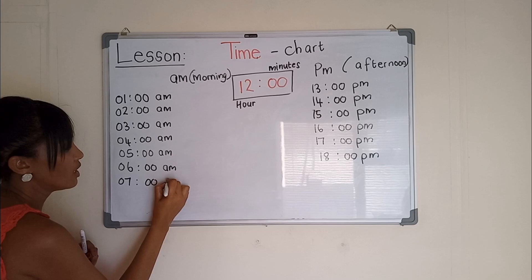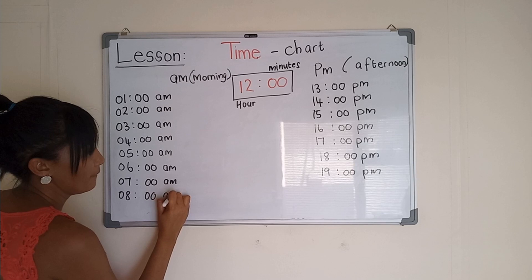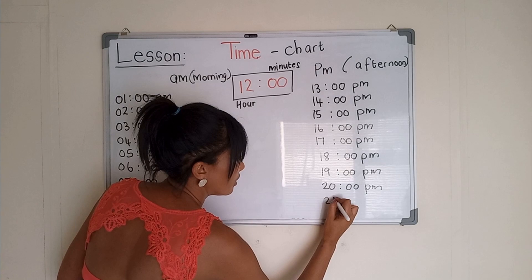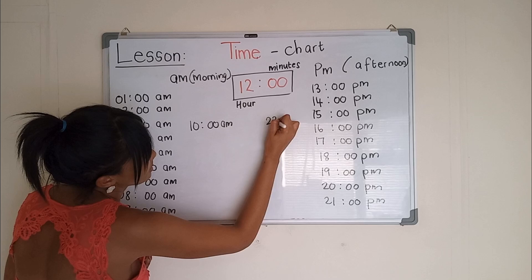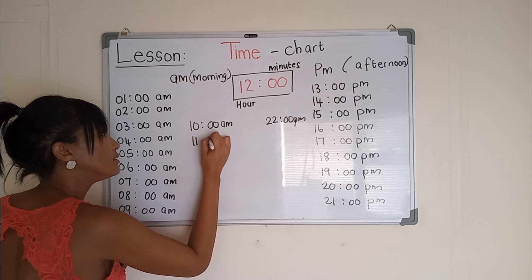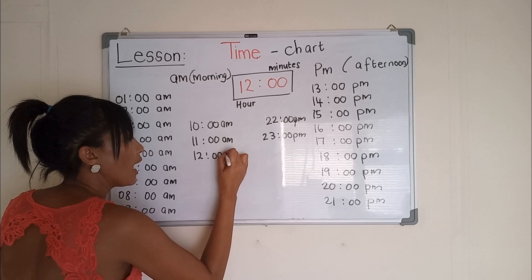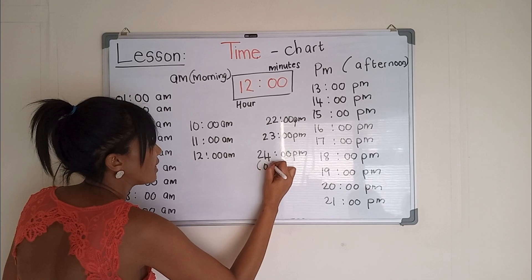Then we go on: 07:00 AM will be 19:00 PM. 08:00 AM will be 20:00 PM. Then we have 10:00 in the morning and in the evening we will have 22:00 PM. 11 o'clock in the morning is 23:00 PM. 12 o'clock AM is still morning, and 24:00 PM — we can also write it as 00 colon 00.